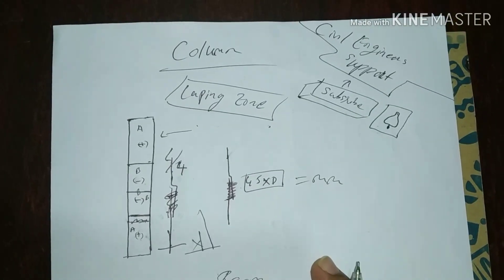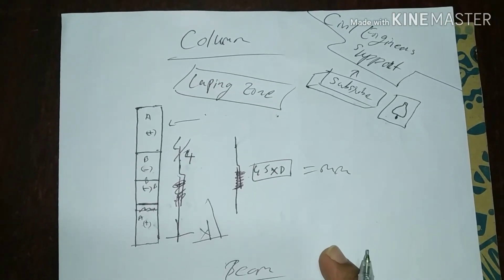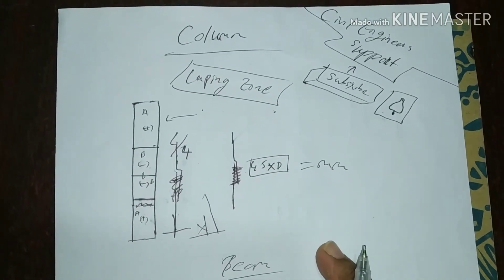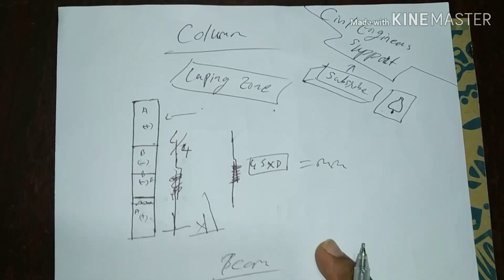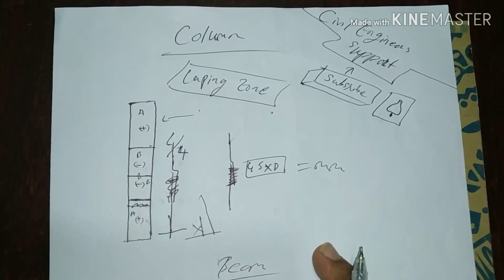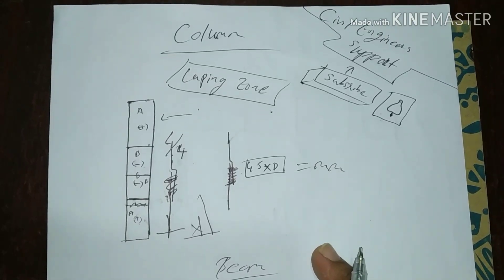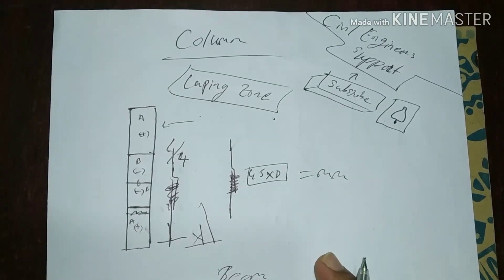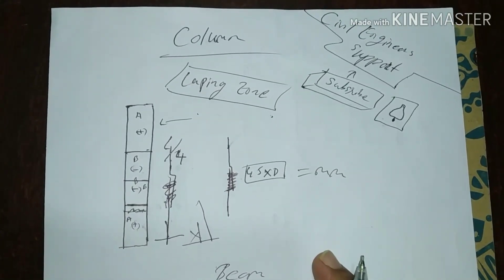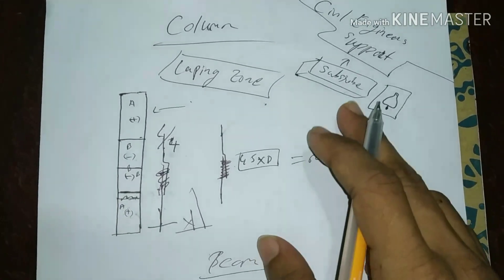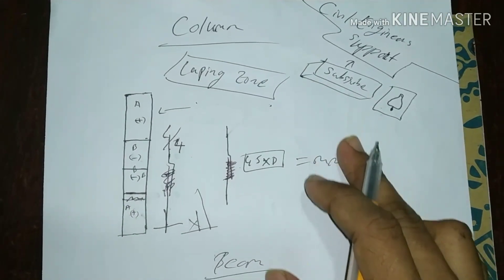So friends, tell us: should the lapping be in the positive zone or negative zone? Please leave us a comment. Thanks for watching my videos — subscribe to my channel for more updates.